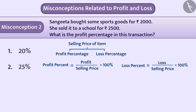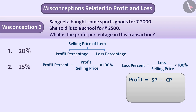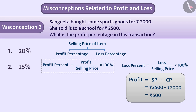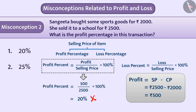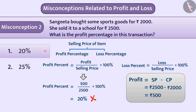While solving this example, children correctly find profit = SP − CP = ₹2500 − ₹2000 = ₹500. But while getting the percentage, they write: profit percentage = (profit ÷ selling price) × 100 = (500 ÷ 2500) × 100 = 20%. This answer of 20% is wrong, so option 1 is the wrong answer.